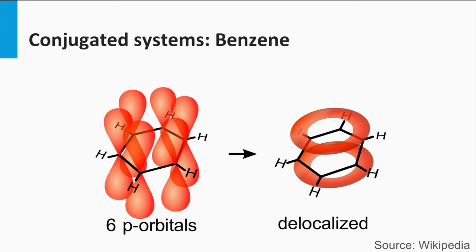This molecule has six carbon atoms and six p-orbitals. They mix forming two circle orbitals that are occupied by, in total, six electrons. These electrons do not belong to one single atom, but to a group of atoms.